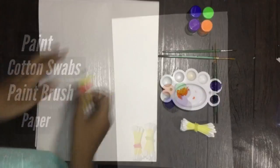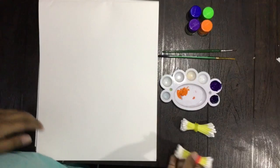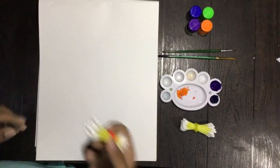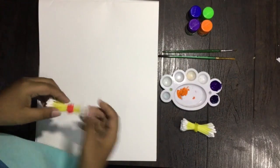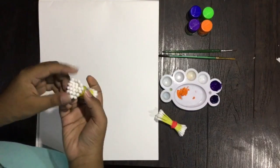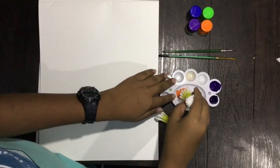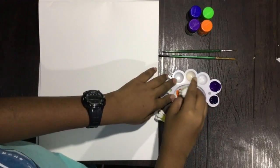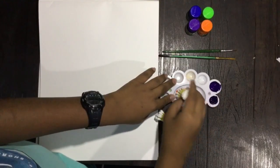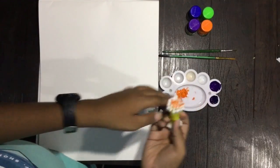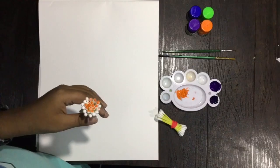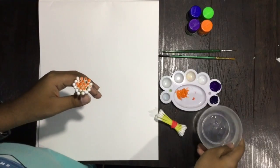Now we have our paper, we have our cotton swabs, paint, paintbrush, so let's start. So we'll take the bigger end like this and we'll dip it nicely like this. If you want, you can also pour some water. It's your wish.